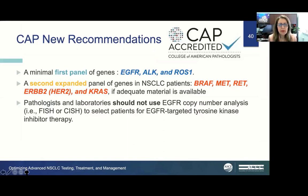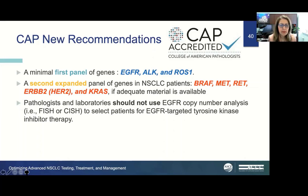The College of American Pathologists recommends at least a panel of EGFR, ALK, and ROS1 as a first panel when material is limited. The expanded second panel includes BRAF, MET, RET, ERBB2, and KRAS when adequate material is available. CAP also recommends not reporting EGFR copy number analysis and not using FISH, CISH, or other methodologies for EGFR detection.